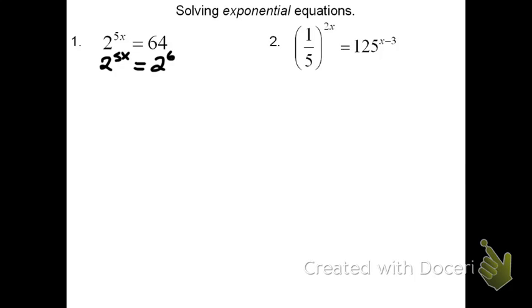Once I have those bases equal, I can now set the exponents equal. That means I can say 5x equals 6. It's become a pretty simple equation to solve. All I need to do is divide both sides by 5, and there's my answer. x equals 6 fifths.